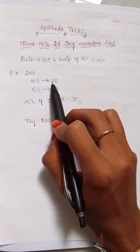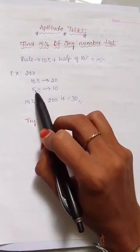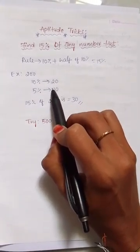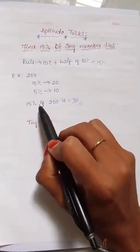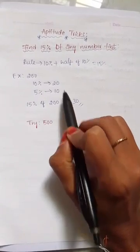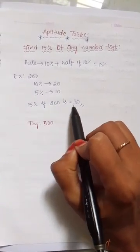10% of 200 is 20, and the 5% means half of the 10%, that is 10. Here, 15% of 200 is 30. 10 plus 20, that is 30.